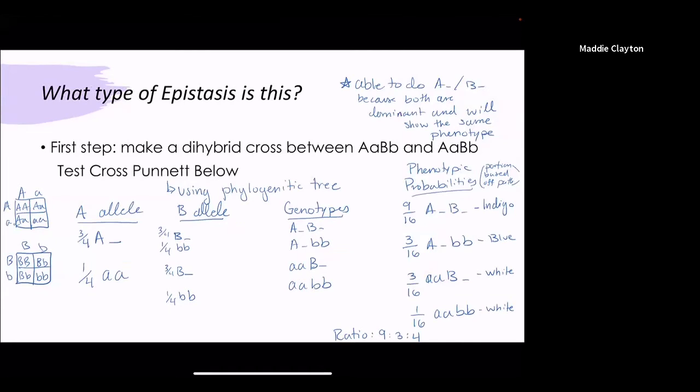Using a Punnett square you can take the A allele and you can use A hyphen for your allele notation for dominant. They will show no matter whether you have big A big A or big A little a. So you have three quarters chance of having a dominant genotype and then you have a quarter chance of having recessive. Same goes for the B allele.